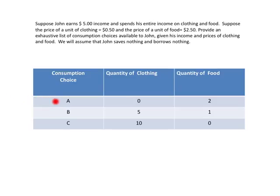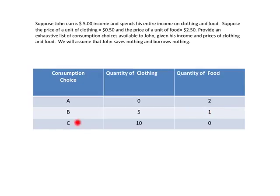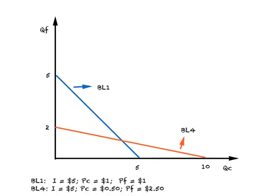At point A, John decides to spend no money on clothing, leaving five dollars for food. Since food costs $2.50, the maximum amount of food he can buy is two units. At choice B, John buys five units of clothing at 50 cents each, spending $2.50, leaving $2.50. Since the price of food is $2.50, he can buy one unit of food. In this way we write down the full list of choices and draw Budget Line 4 (BL4) as the orange line.